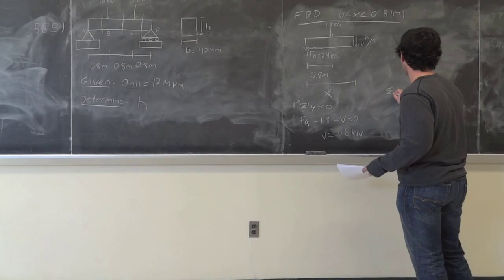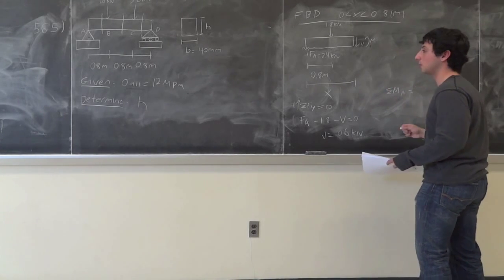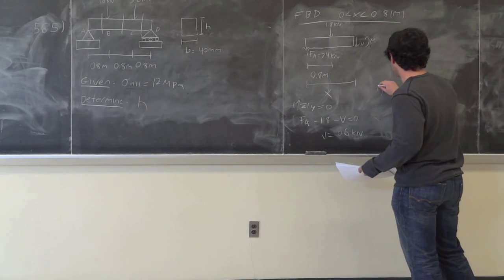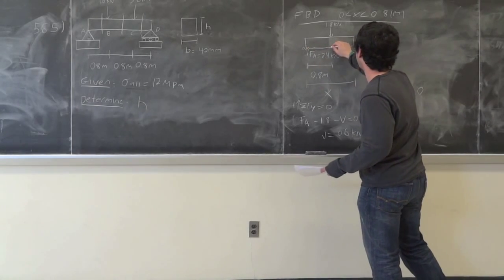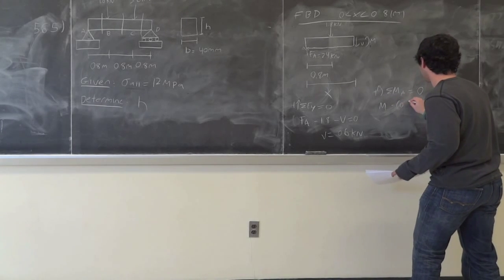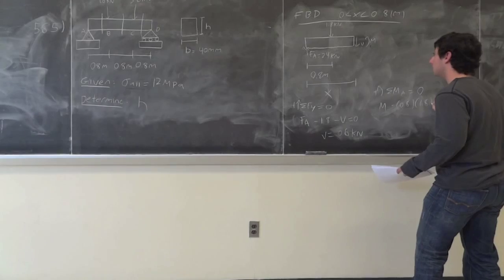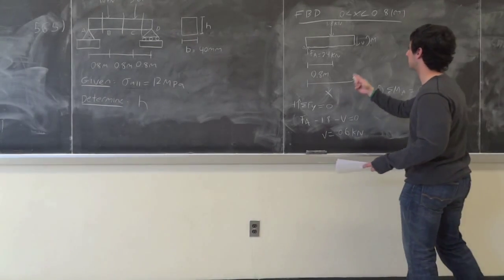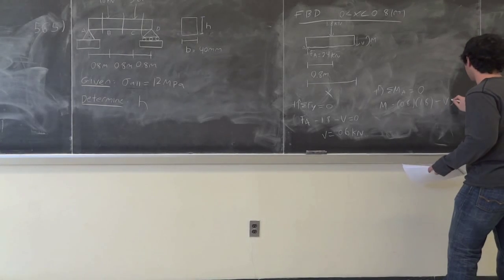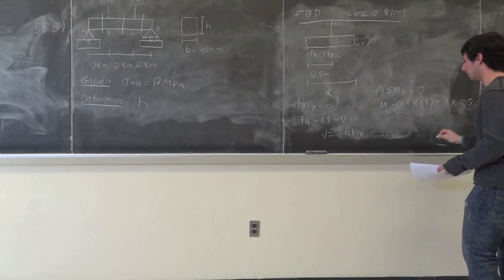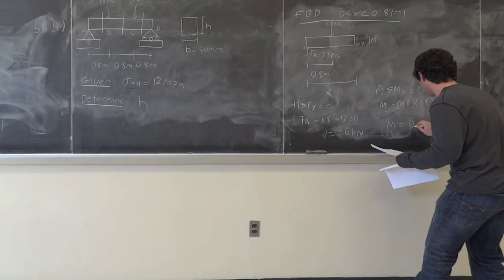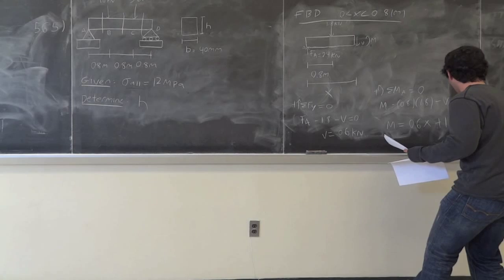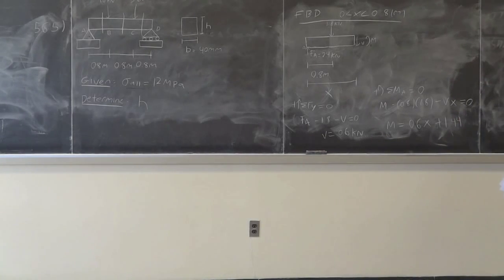Summing the moments at A to find M, taking counterclockwise to be positive: M minus 0.8 times 1.8 minus x times V equals 0. So M is equal to 0.6x plus 1.44. Remember this because we're going to have all linear relationships for M. These equations will allow us to draw the bending moment diagrams.